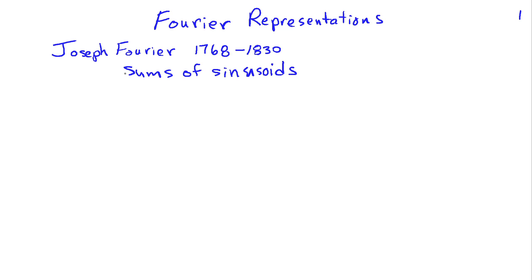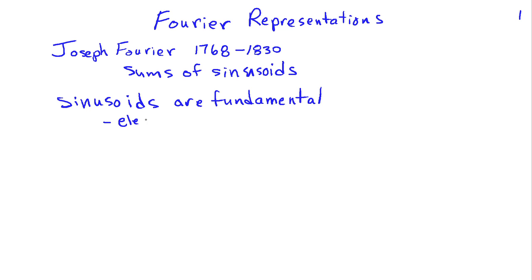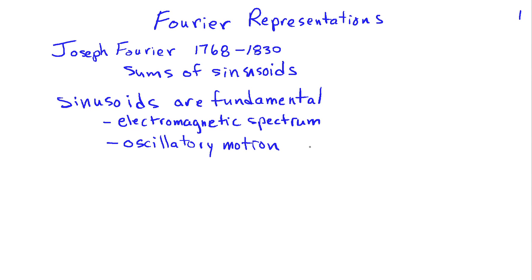Now why sinusoids? Sinusoids are pretty fundamental signals — they're fundamental in nature. For example, if we take the electromagnetic spectrum, we have signals that are sinusoidal of different frequencies, including light, where each frequency maps to a different color, and x-rays, and down in the gigahertz range where your cell phone operates. Sinusoids also occur in nature with oscillatory motion, like with a pendulum, or with a spring-mass system, or if your shock absorbers are worn out in your car.